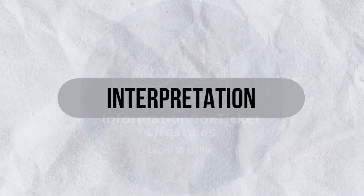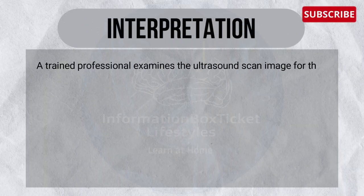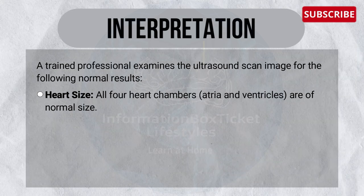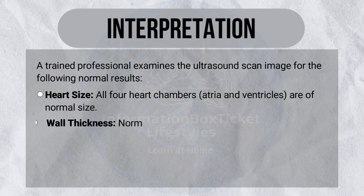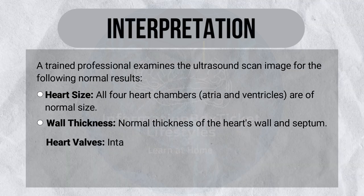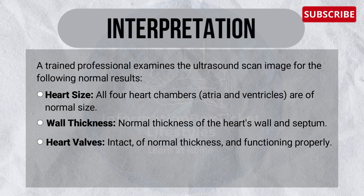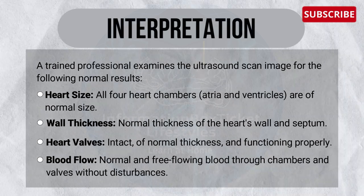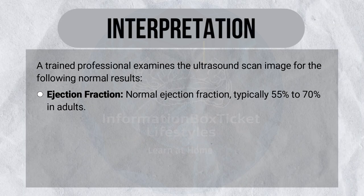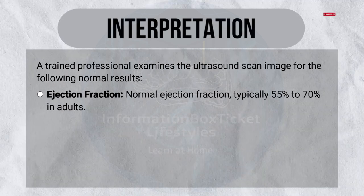Let's learn the interpretation of echocardiography. A trained professional examines the ultrasound scan image for the following normal results. No. 1 — Heart size: all four heart chambers, atria and ventricles, are of normal size. No. 2 — Valve thickness: normal thickness of the heart's wall and septum. No. 3 — Heart valves: intact, of normal thickness, and functioning properly. No. 4 — Blood flow: normal and free-flowing blood through chambers and valves without disturbance. No. 5 — Ejection fraction: normal ejection fraction, typically 55% to 70% in adults.